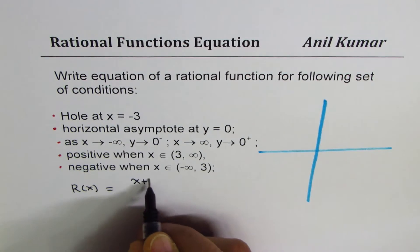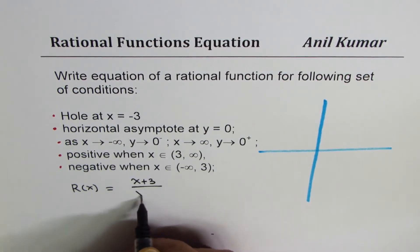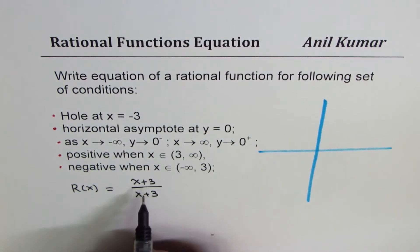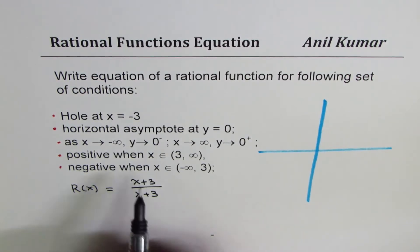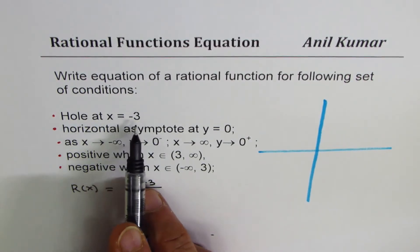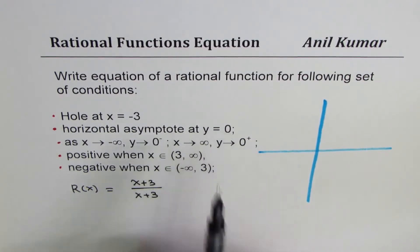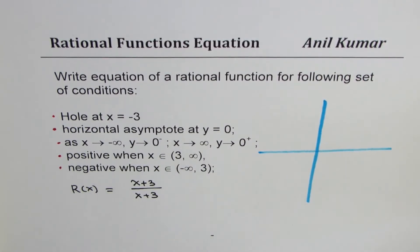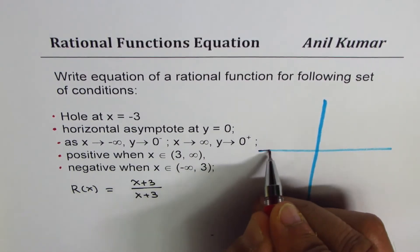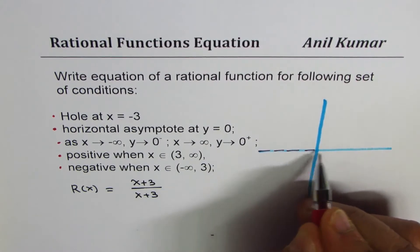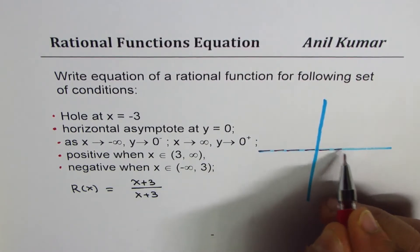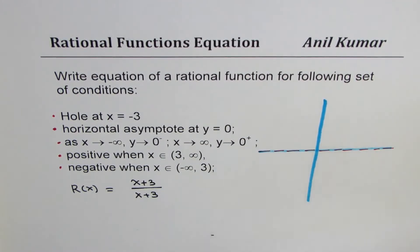A hole at x equals minus 3 means we have a factor x plus 3 in the numerator and x plus 3 in the denominator — that will create a hole at x equals minus 3. A horizontal asymptote at y equals 0 really means that the degree of the denominator is higher than or equal to that of the numerator, so we will check the degree.